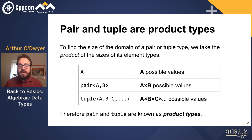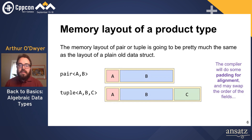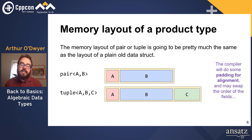So we say that pair and tuple are product types, because when we ask how many values are in the domain, we get that number by multiplying the element type sizes. If I have a pair of A and B, the number of possible values is the number of possible values of A times the number of possible values of B. For a tuple of A, B, C, and so on, we multiply all those sizes together. That's why we call pair and tuple product types.